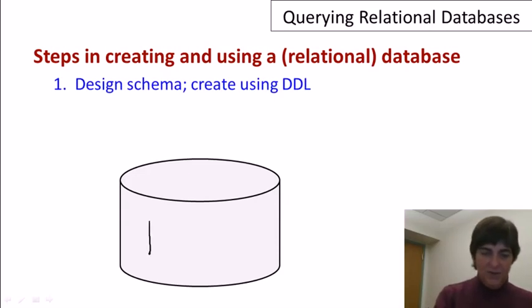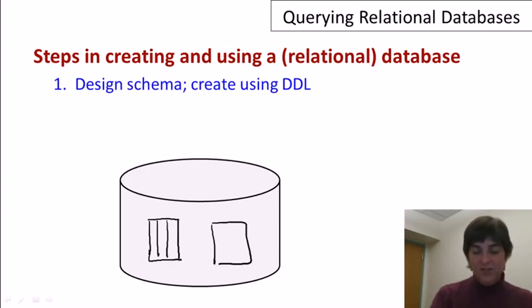As we discussed in previous videos, in a relational database the schema consists of the structure of the relations and the attributes of those relations. So we set those up inside our big disk.